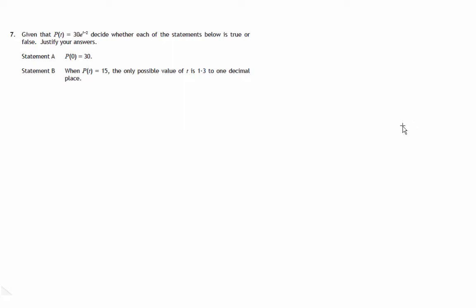This is the solution to question 7, paper 2 of the SQA's Curriculum for Excellence Specimen Higher exam. We're given a function p of t equals 30 lots of e to the power t minus 2, and given a couple of statements we're asked whether they're true or not.